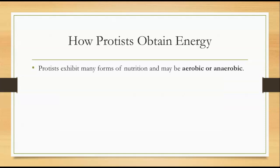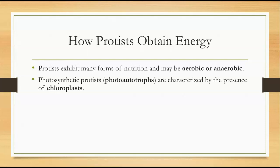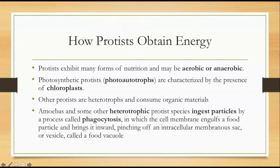How do protists obtain energy? They exhibit many forms of nutrition and could be aerobic or anaerobic. There are some photosynthetic protists called photoautotrophs, characterized by the presence of chloroplasts where photosynthesis happens. Other protists are heterotrophs, meaning they have to eat another organism and consume organic materials. Amoebas and some other heterotrophic protist species ingest particles by a process called phagocytosis — the cell membrane engulfs a food particle, brings it inward, pinching off an intracellular membranous sac or vesicle called the food vacuole.